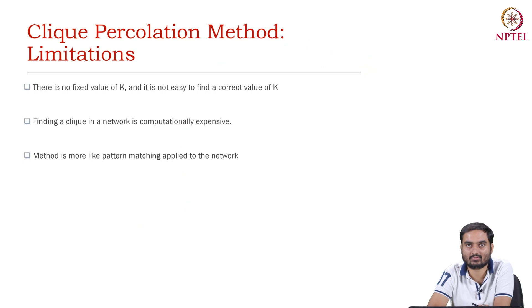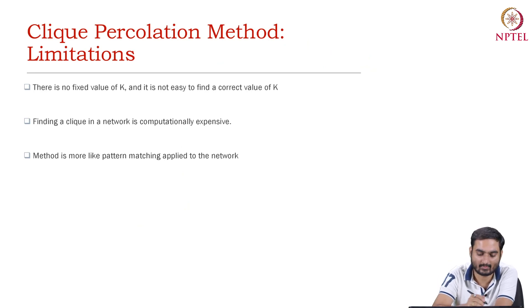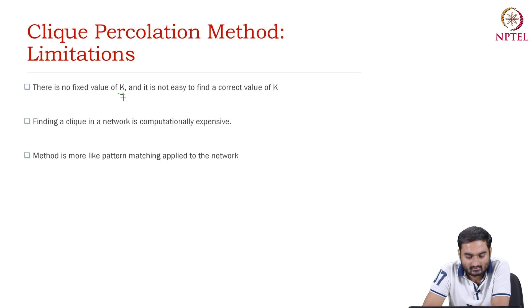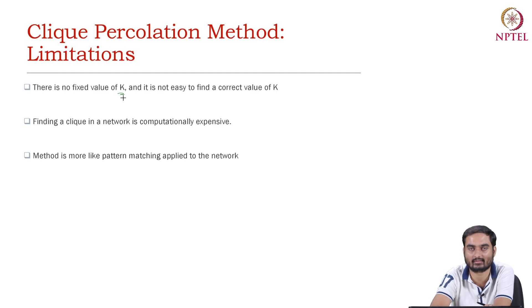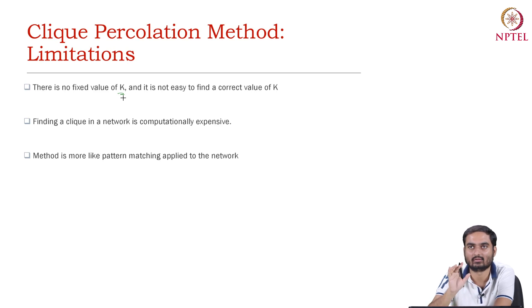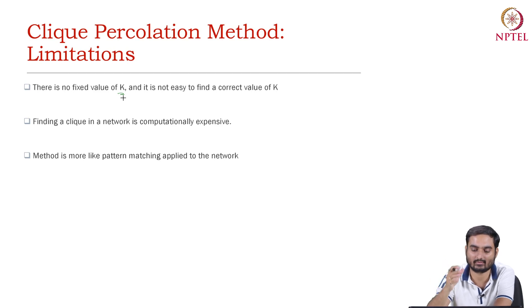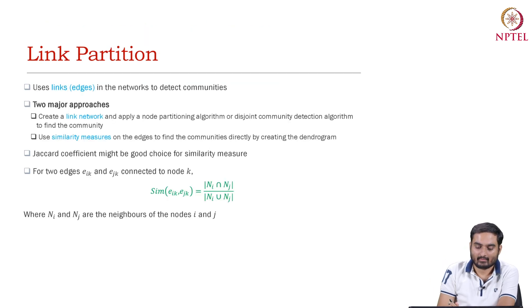This is clique percolation. The first problem is that you have to fix the value of k. The second problem is that finding cliques is computationally expensive — it is essentially a pattern matching algorithm, where you try to find clique-like patterns in a graph and group them.